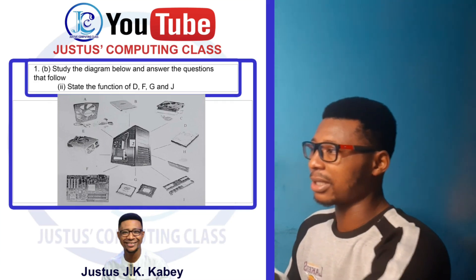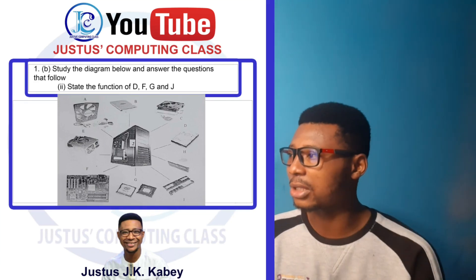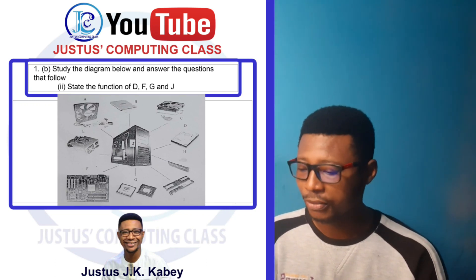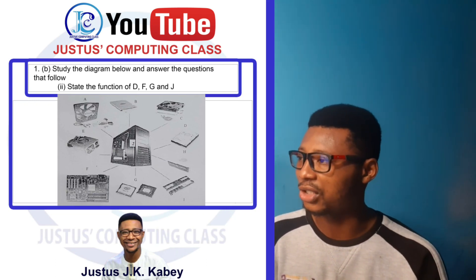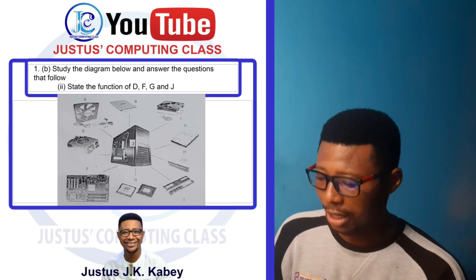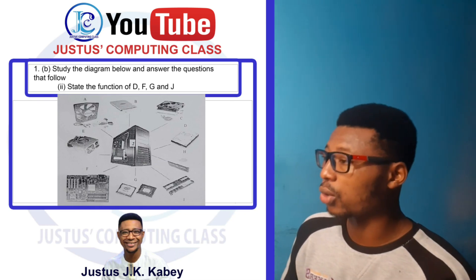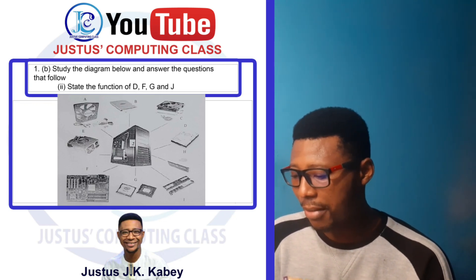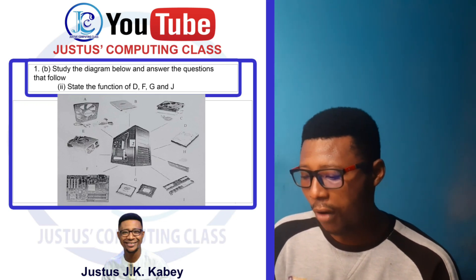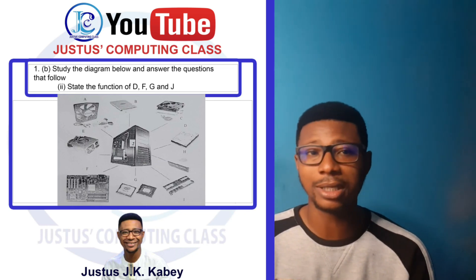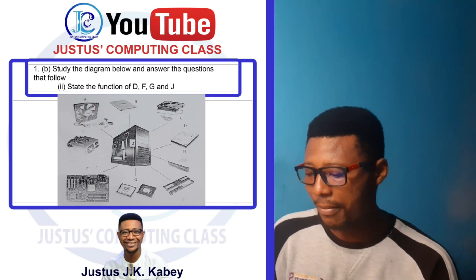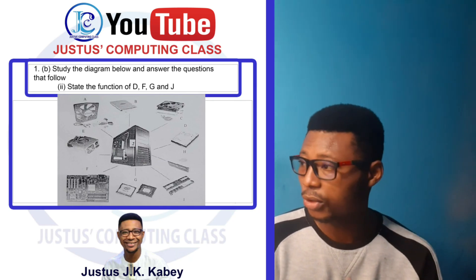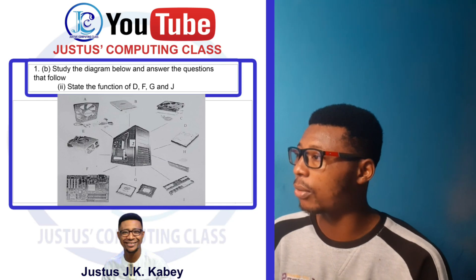The last question of the practical section says: state the function of the parts labeled D, F, G, and J. Part label D is the hard disk. The hard disk is the main storage area that stores all files and documents in the computer system.